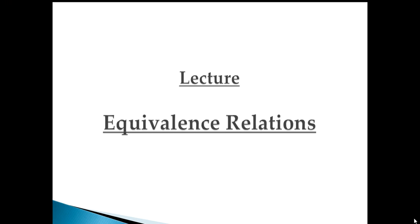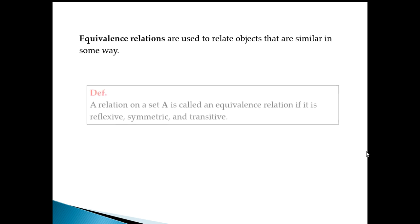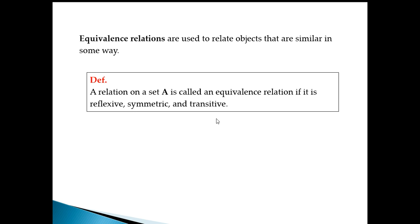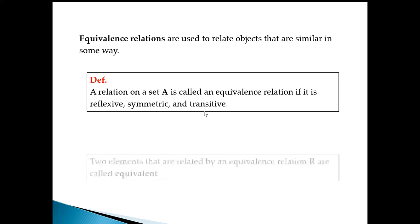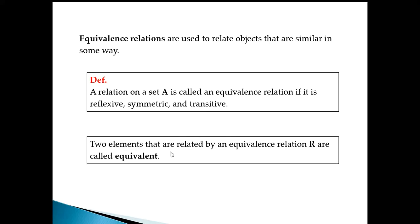Welcome to this new lecture on equivalence relations. Equivalence relations are used to relate objects that are similar in some way. A relation on a set A is called an equivalence relation if it is reflexive, symmetric, and transitive. Two elements related by an equivalence relation R are called equivalent.